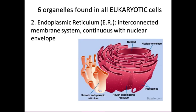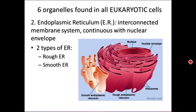Number two is the endoplasmic reticulum, often just called the ER. This is an interconnected membrane system that is continuous with the nuclear envelope — the membrane pulls off the nucleus and forms folds, all interconnected with each other. There are two types: the rough ER, which has ribosomes on it, and the smooth ER, which doesn't.